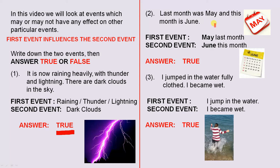Number 2: last month was May and this month is June. The first event: May was last month. The second event: June was this month. The answer is true, because if last month was May, this month has to be June because it directly follows after May.